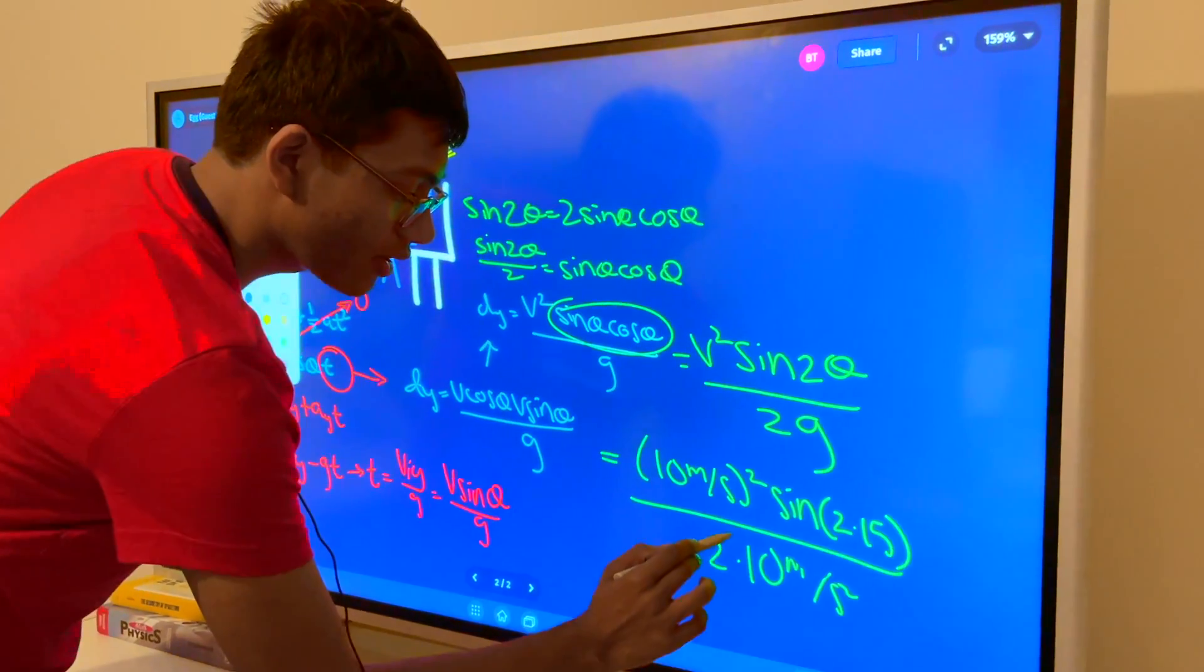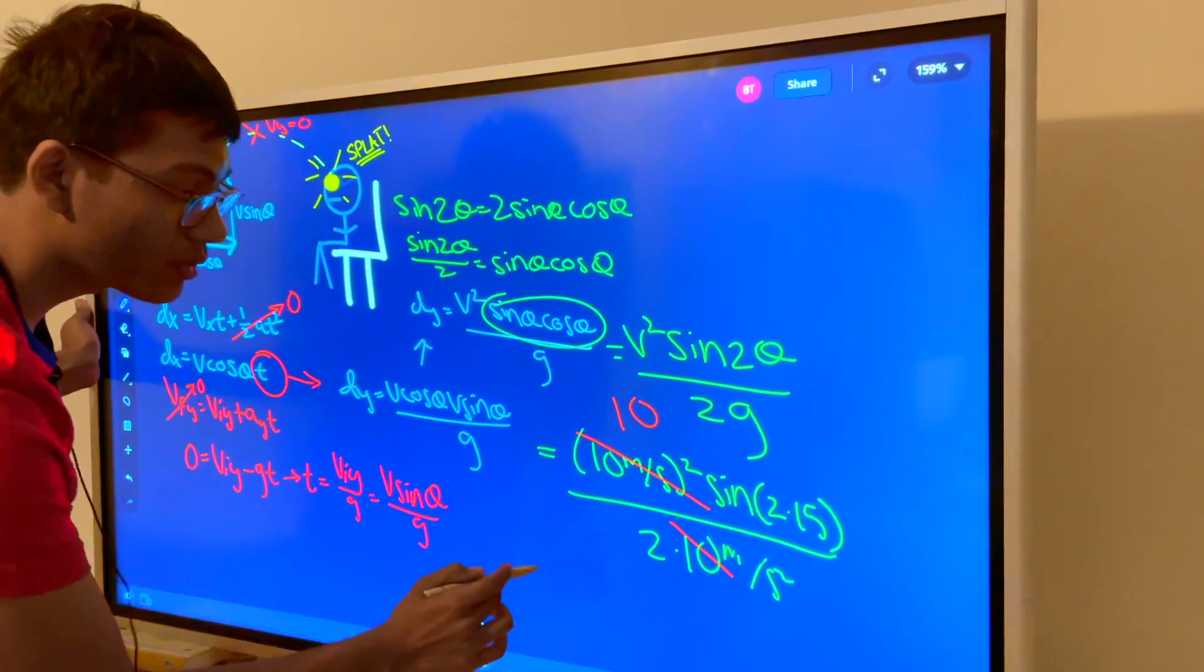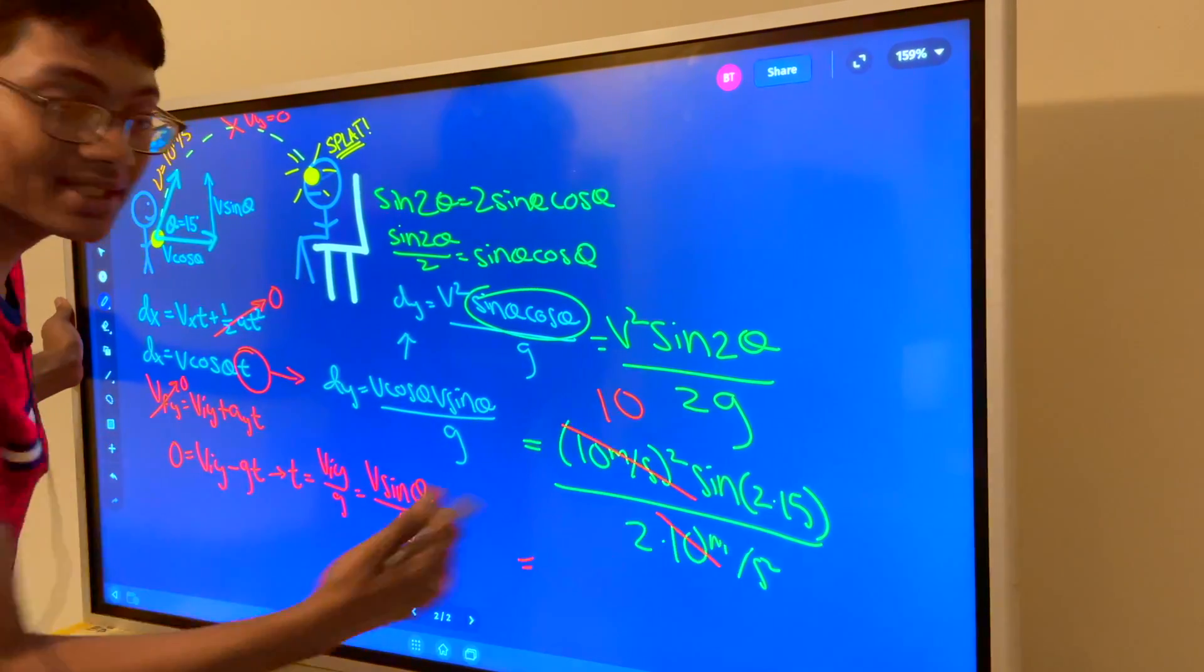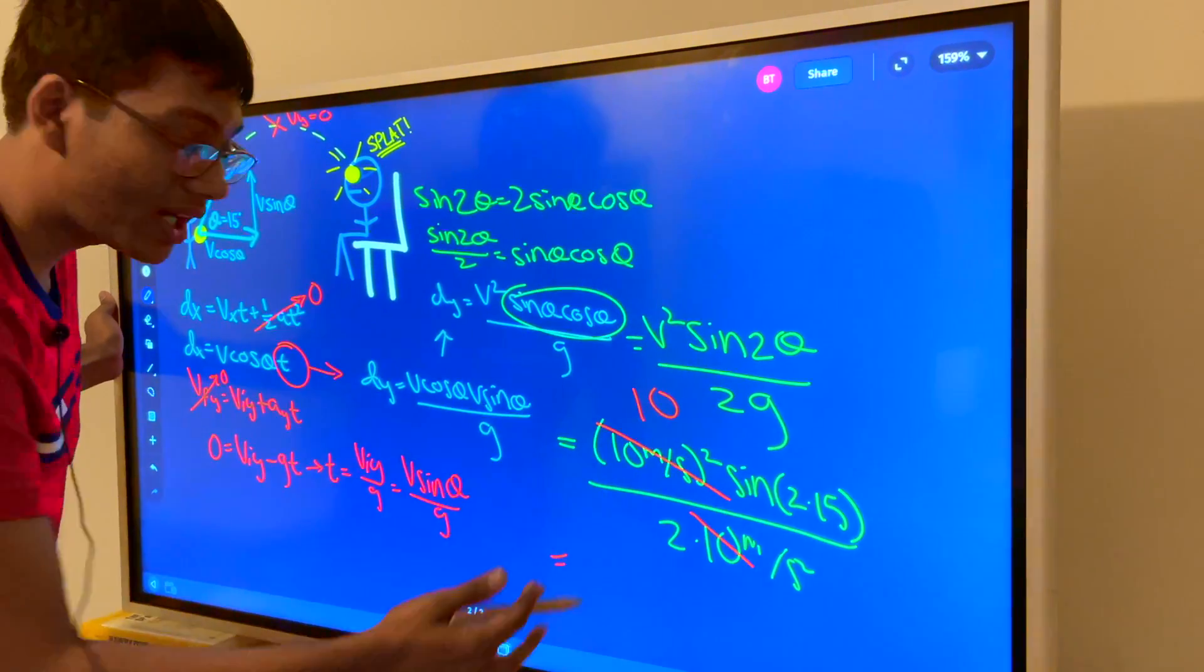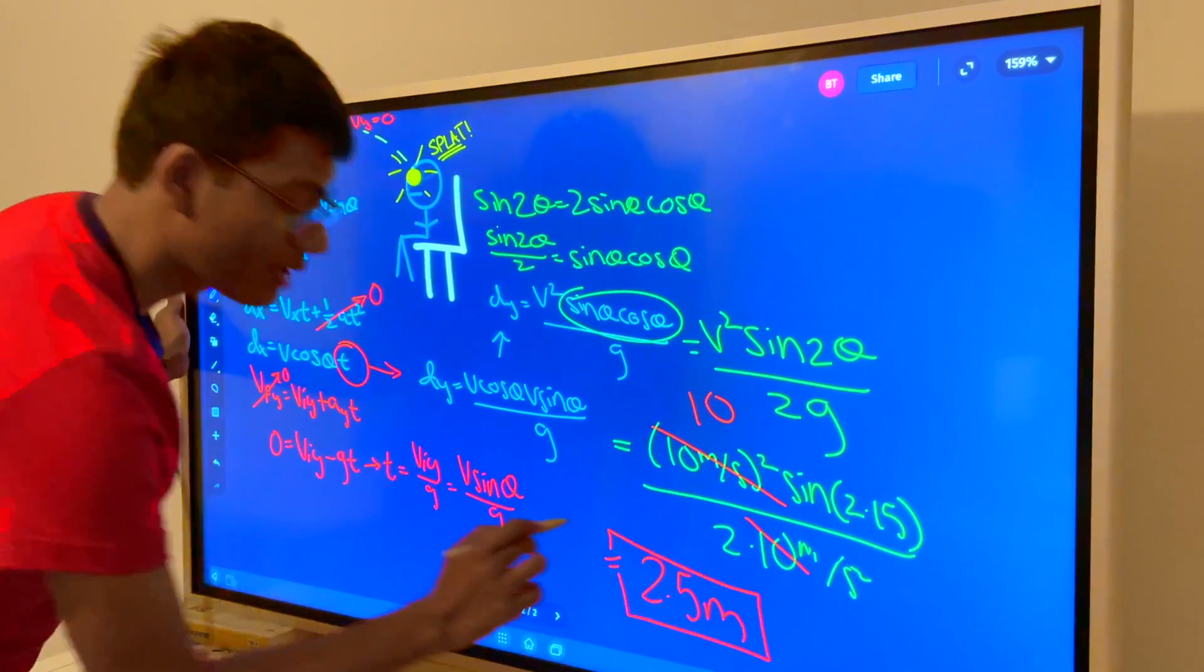We know that this over here 10, 10, it's going to go in 10 times because 10 squared is going to be 100 and so we're going to be left with what? Sin(30) is going to be half. Half of 10 is what? 5. 5 divided by 2 is going to give us a final answer of 2 and a half meters and we're done. That's pretty great.